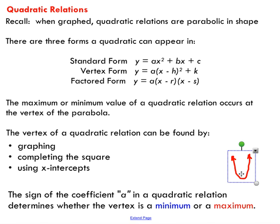The sign of the coefficient a in a quadratic relation determines whether the vertex is a maximum or a minimum. For this parabola that opens upwards, the a value would be positive, which means I have a minimum. However, if the sign of my a coefficient was negative, my parabola would open downward, and I would have a maximum and no minimum.